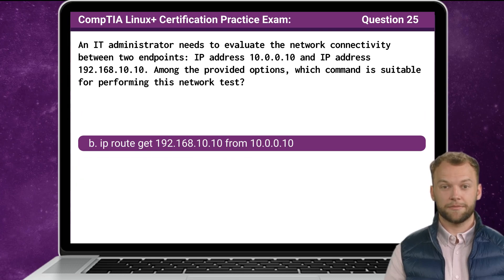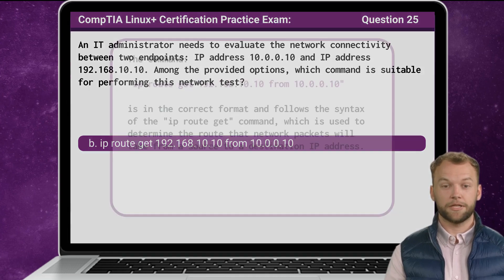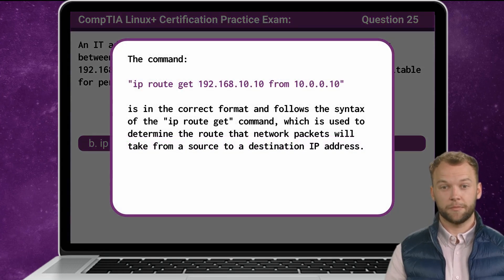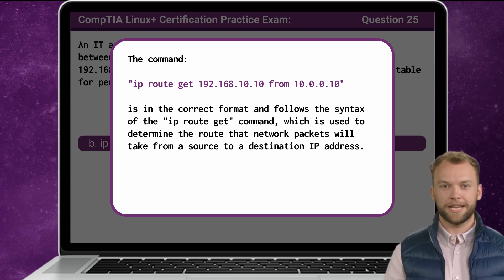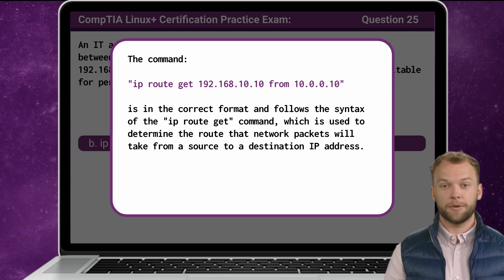The answer is B: ip route get 192.168.10.10 from 10.0.0.10. This command is in the correct format and follows the syntax of the ip route get command, which is used to determine the route that network packets will take from a source to a destination IP address.